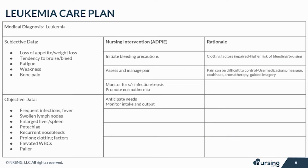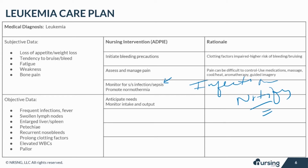Especially during treatment, patients are at a higher risk for developing sepsis. Monitor closely for signs and symptoms of infection and notify the provider. Progressive hyperthermia may occur as the body's response to the disease and the effects of treatment. Monitor your patient's temperature closely, especially during chemo.